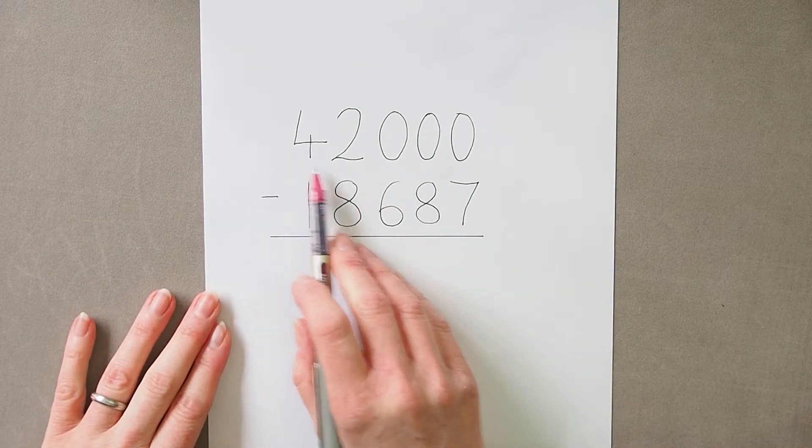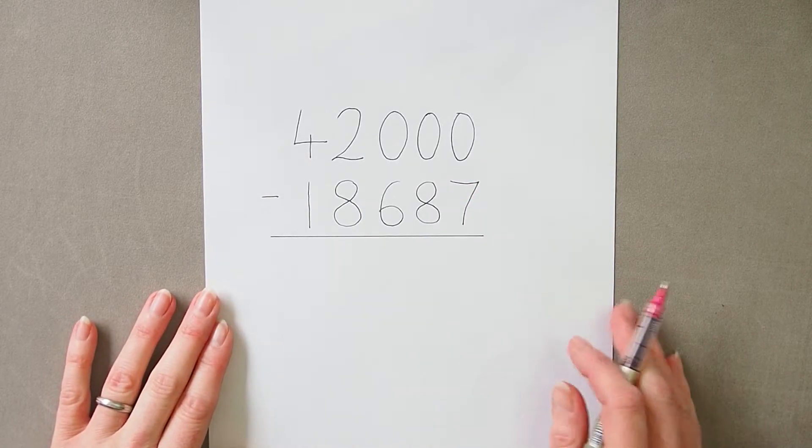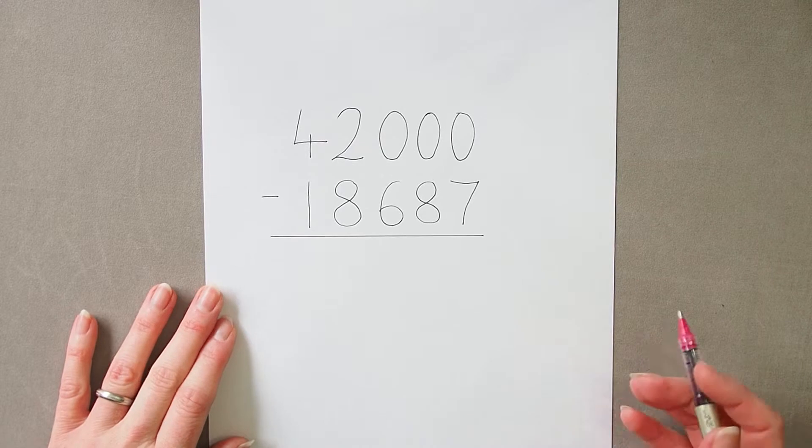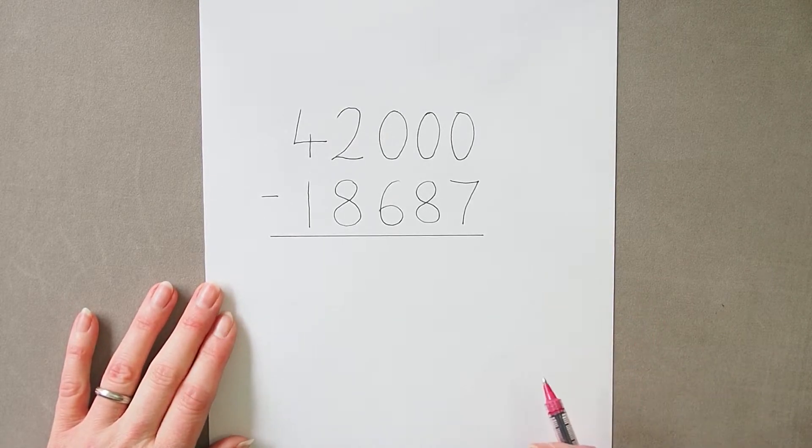So when we've got a number in the top line which has a couple of zeros that we need to exchange across, we follow exactly the same method as we would if we were exchanging across just one zero.